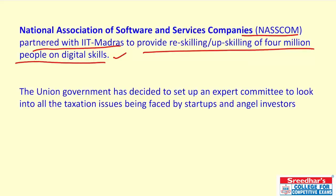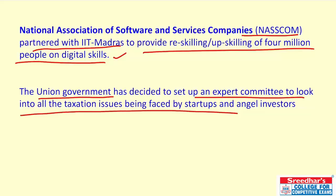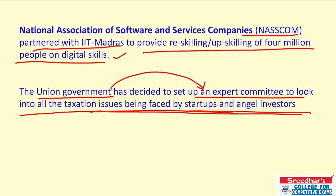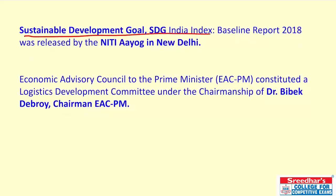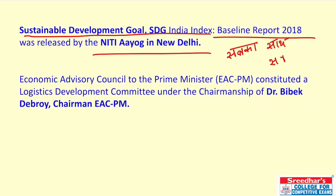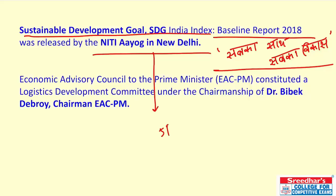The union government has decided to set up an expert committee to look into all taxation issues faced by startups and angel investors. The Sustainable Development Goal (SDG) India Index Baseline Report 2018 was released by NITI Aayog in New Delhi. It aligns with PM Modi's 'Sabka Saath, Sabka Vikas.' According to the global SDG movement, there are five P's: People, Planet, Prosperity, Partnership, and Peace.